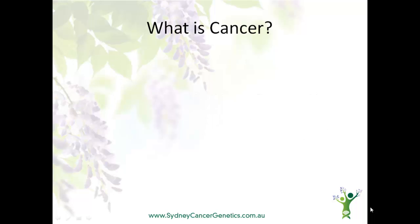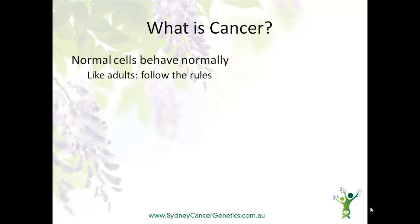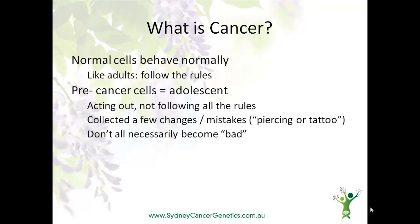So what is cancer? Let's use some analogies to try and understand. The first analogy likens cells to people. Normal cells are like adults — they know what the rules are, and generally they follow them. A breast cell knows what's expected and it behaves in a certain way. Pre-cancer cells are like adolescents — in a way they're acting out, not following all the rules. For a cell, this means that it's collected a few mistakes in its DNA that make it different from a normal breast cell. I think of this as the piercings, tattoos, hairstyles and clothing choices of an adolescent.